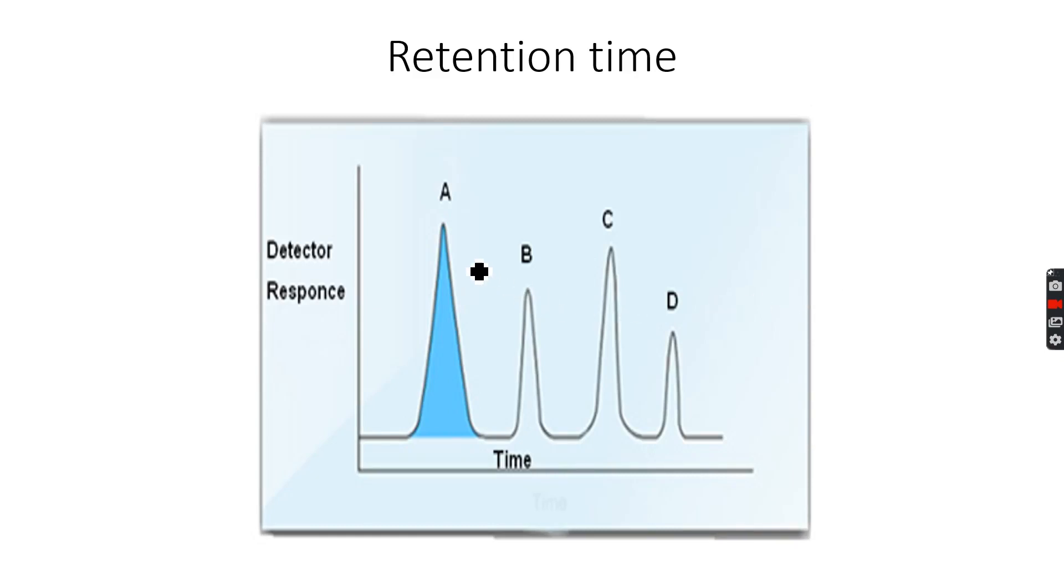This gives the percentage composition of solute A in the solute mixture. Let's say that the area under curve for solute A is the blue color, area under curve for solute B is red, area under curve for solute C is green, and area under curve for solute D is black.